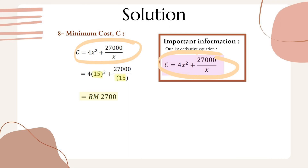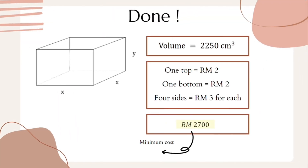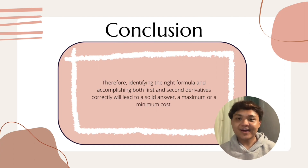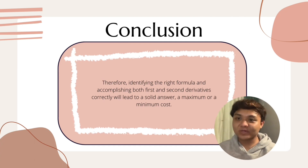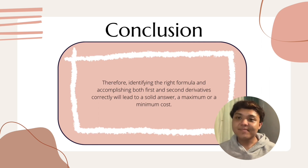Using the calculator, we get RM2700 as the final answer. So to construct the box with volume 2250 cubic centimeters, with top and bottom at RM2 per cm² and sides at RM3 per cm², the minimum cost is RM2700. Identifying the right formula and completing both the first and second derivative correctly will lead to a solid answer for a maximum or minimum cost.